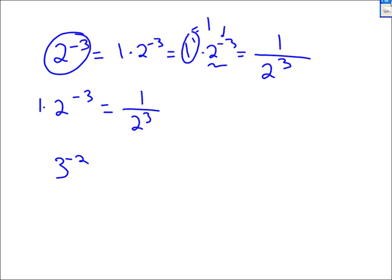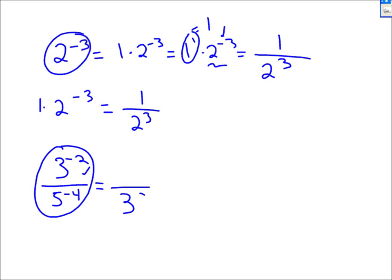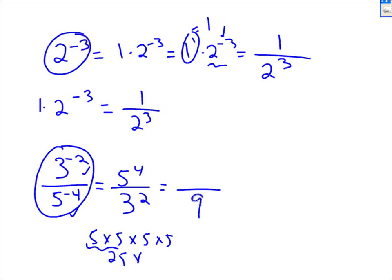If you have 3 to the negative 2 over 5 to the negative 4, and the instructions are to evaluate — figure out how much that is. This 3 to the negative 2 is on top; I put it on the bottom, and the sign is now positive, so it's 3 to the second — it's 9. The 5 to the negative 4 is in the bottom; I put it on top. It's 5 to the 4th. 5 times 5, four times: 25 times 25 is 625. And there's your answer.